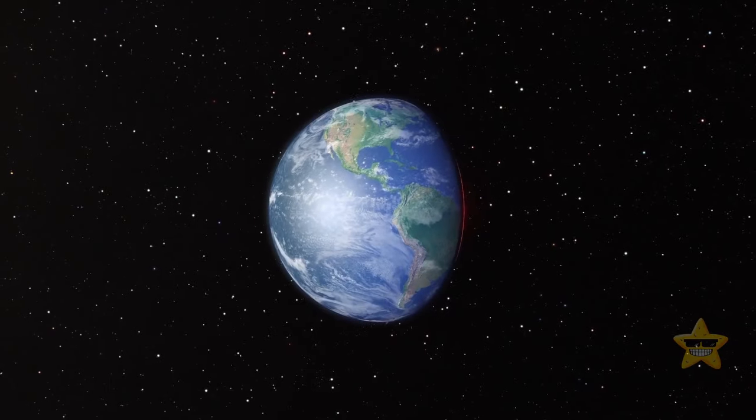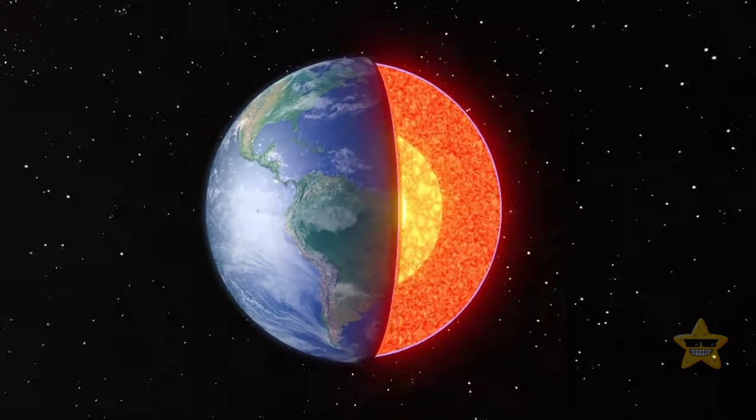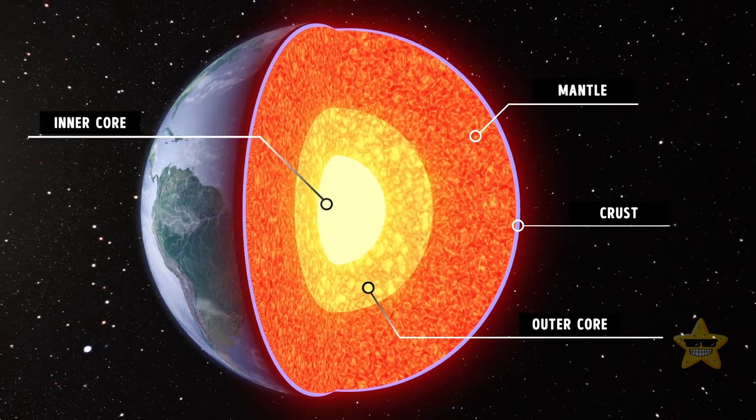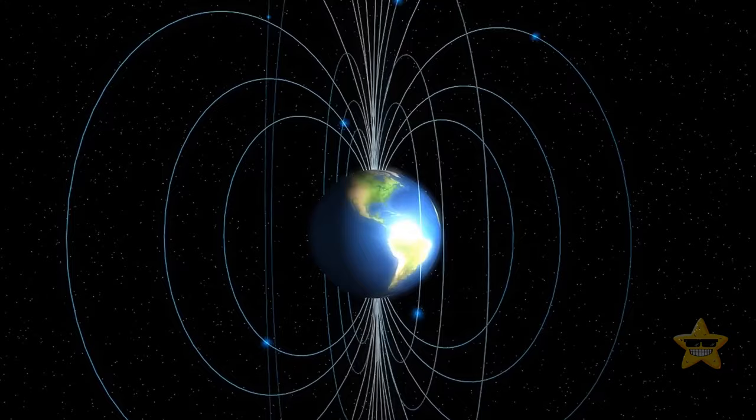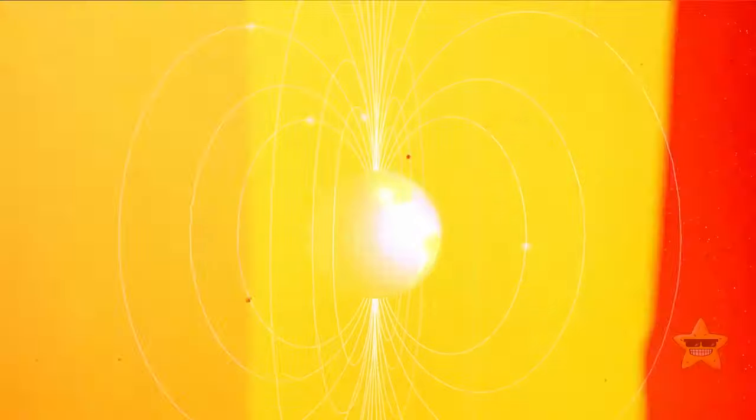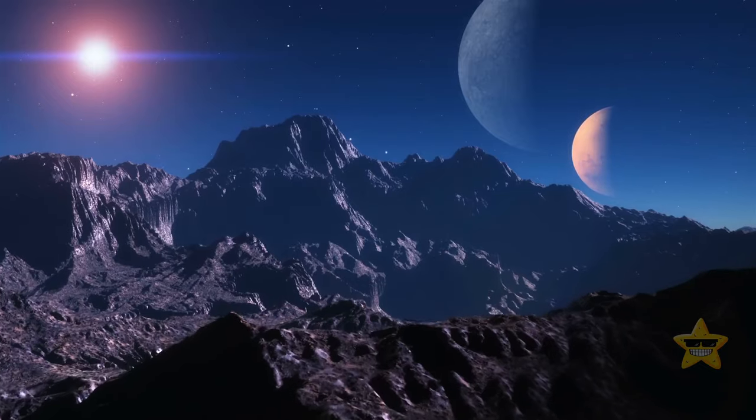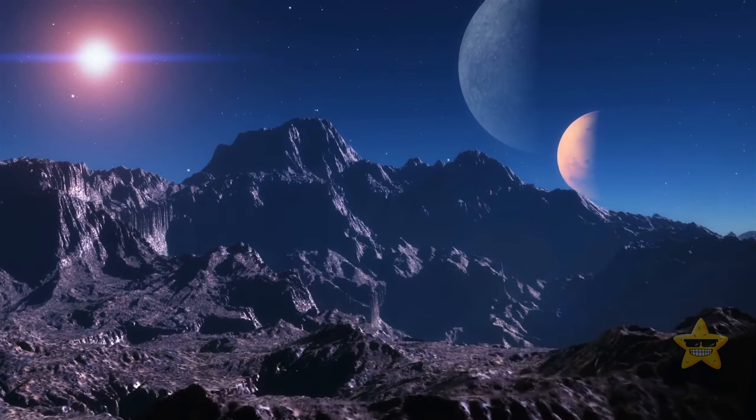We're also still trying to figure out precisely how the planet's inner engine works, and how the swirling, conducting materials in the outer core create our protective magnetic field. Plus, with 4.5 billion years of geological chaos, we're sometimes better off studying meteorites or the surfaces of other celestial bodies for clues about our planet's history.